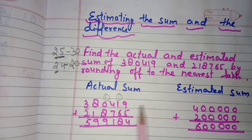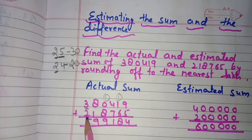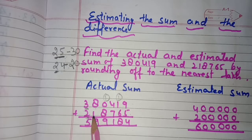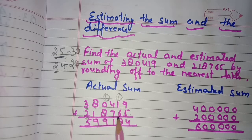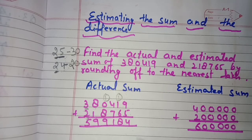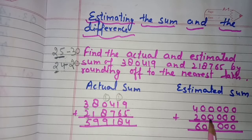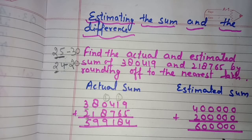So 3,80,419 is rounded off to 4 lakh. Now for the next number, we round off 2 — the digit next to its right side is less than 5, so 2 will remain 2 and all the numbers to its right side are written as zeros. So 2,18,765 is rounded off to 2 lakh. We now add these two rounded numbers and our estimated sum is 6 lakh.